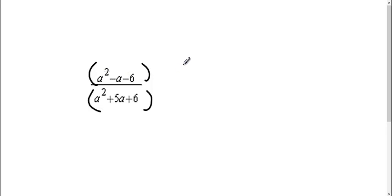So on the top, I can break this down into my two parentheses, an a and an a, and I ask myself what times what gives me 6 that adds up to negative 1. So a negative 3 and a positive 2.